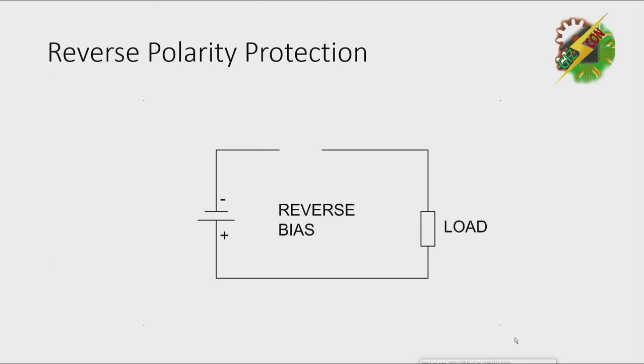But for reverse bias, if the battery is accidentally placed in reverse, the current is not allowed to flow.